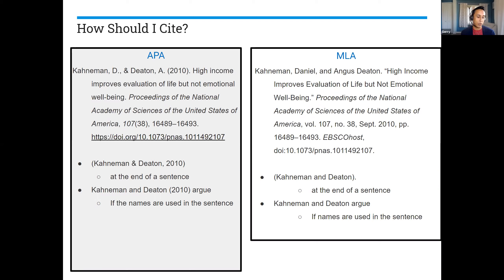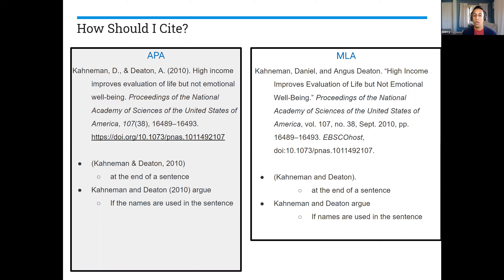There are two separate ways that you can reference a source in your paper. You can do it parenthetically, where it says Kahneman, Deaton, and then for APA there's a comma and the year 2010, or just Kahneman and Deaton. Or if you choose to embed and integrate the names of the authors into the actual body of the paper, you can also do it that way. I always encourage my students to mix it up — don't just use one way or another. Having a variety is the marker of an effective writer.